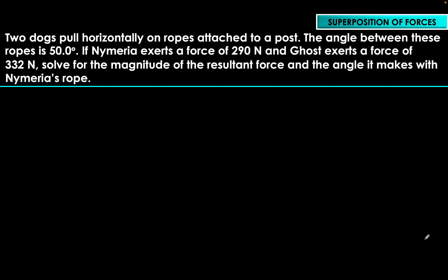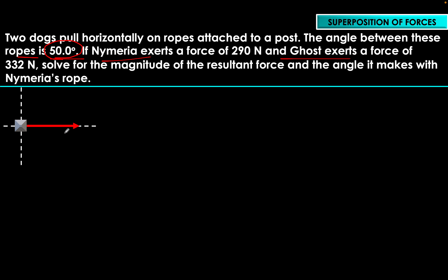We have to strategize how we want these two forces to appear. Both Nymeria and Ghost are tied on separate ropes, and the main thing to consider is that there is a 50-degree gap between the two ropes. It doesn't matter where in the Cartesian plane these forces lie, but they have to be 50 degrees apart.